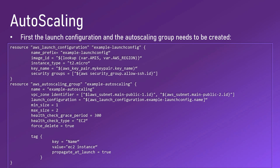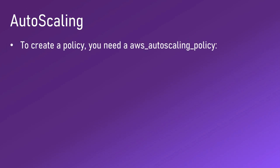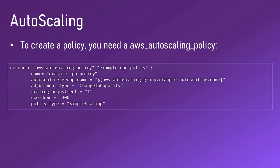If you want dynamic increase or decrease of instances, you can create an auto scaling policy. To create a policy you need an aws_autoscaling_policy resource in Terraform. Here we have an example CPU policy linked to our auto scaling group. The adjustment type is 'ChangeInCapacity' and we are going to scale by plus one. If you want to reduce capacity, you would put minus one. Then you have a cooldown period during which no further scaling events can happen. The policy type in this case is 'SimpleScaling'.